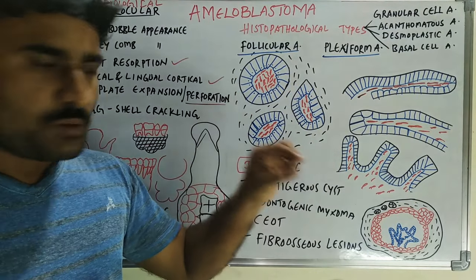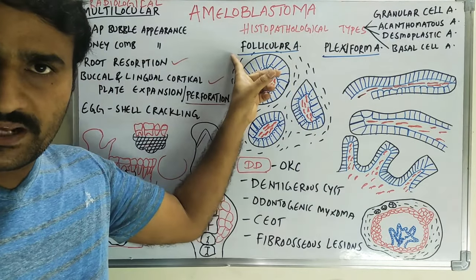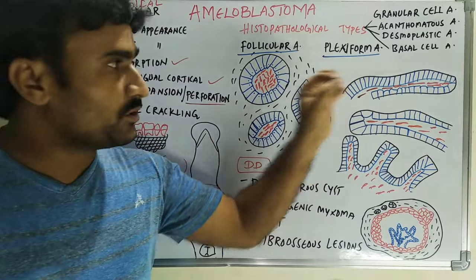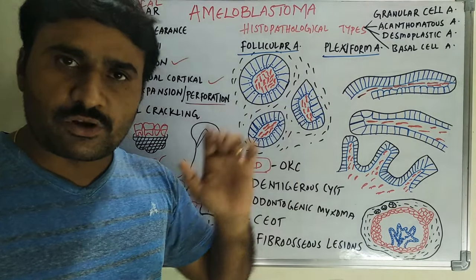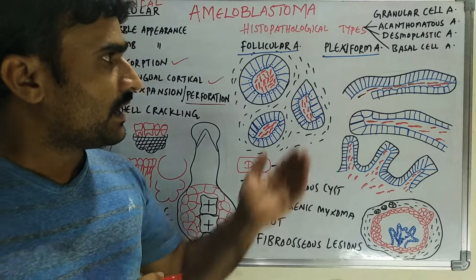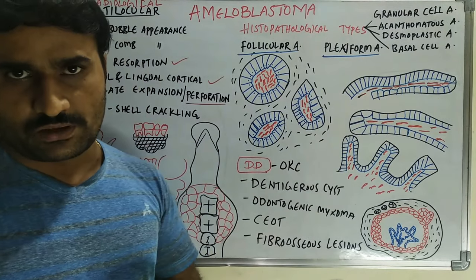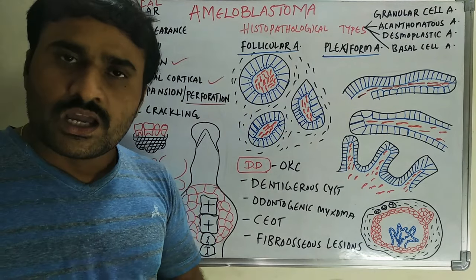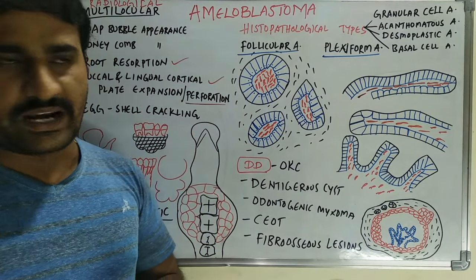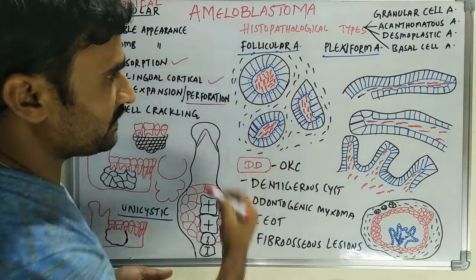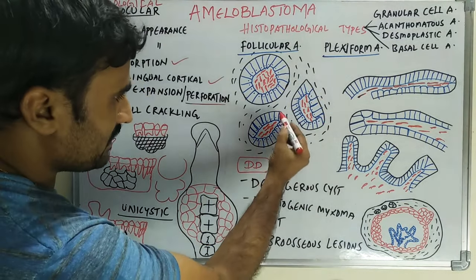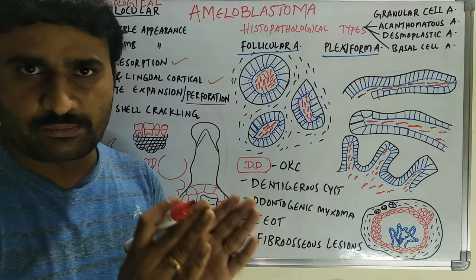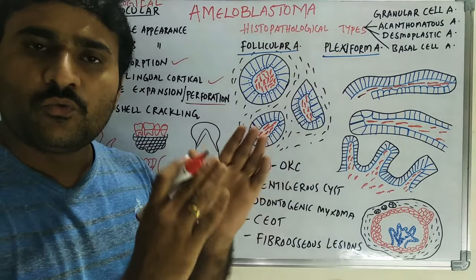There are six histological varieties of amyloblastoma. The most common is follicular amyloblastoma, second most common is plexiform amyloblastoma, and there are also granular cell, acanthomatous, desmoplastic, and basal cell amyloblastoma. In follicular amyloblastoma, we see islands of epithelium.